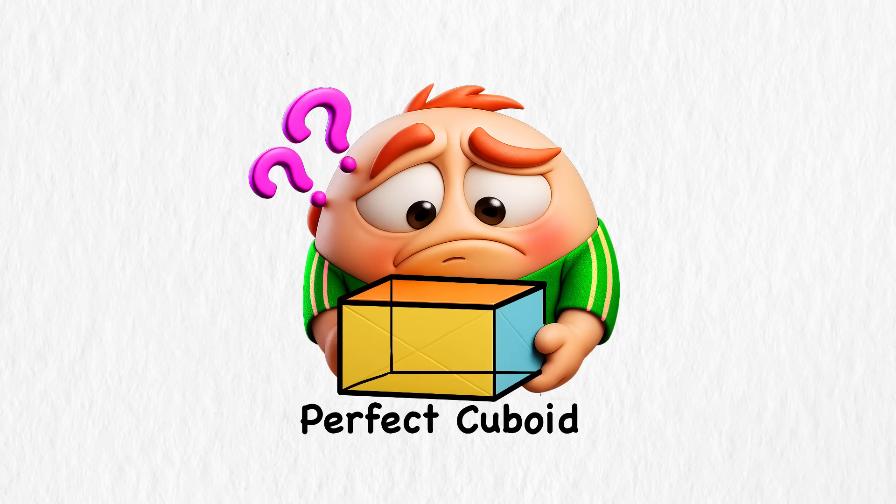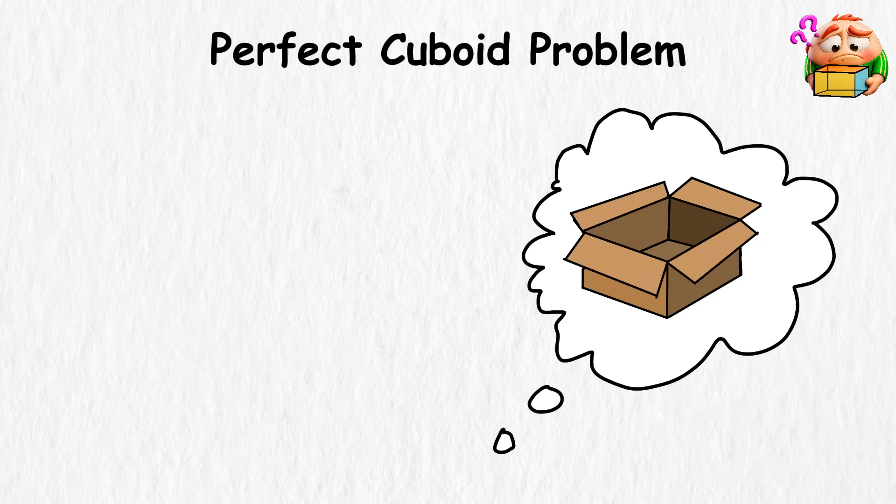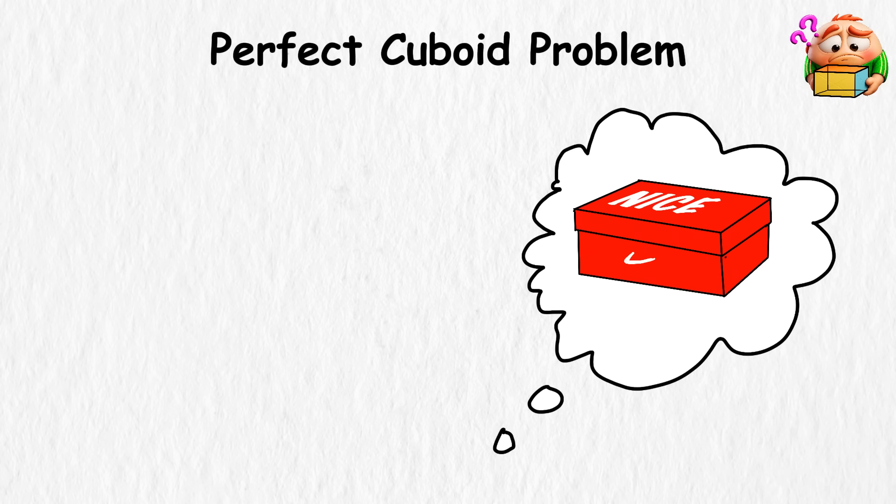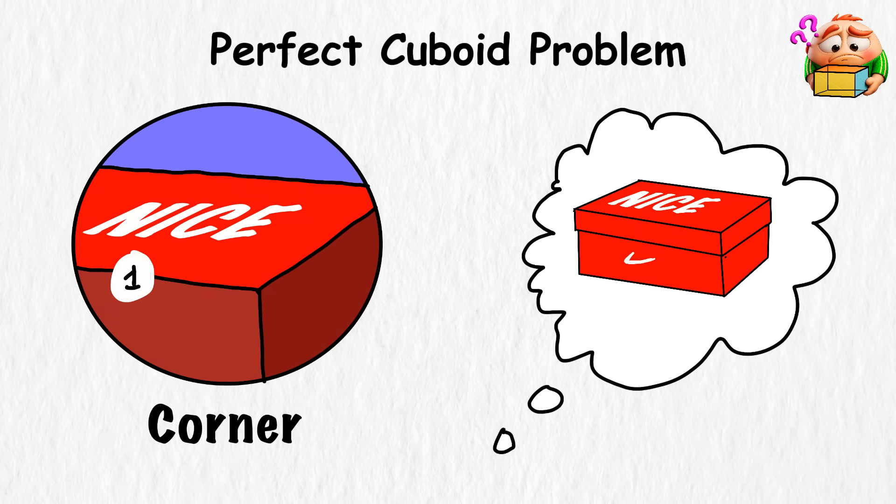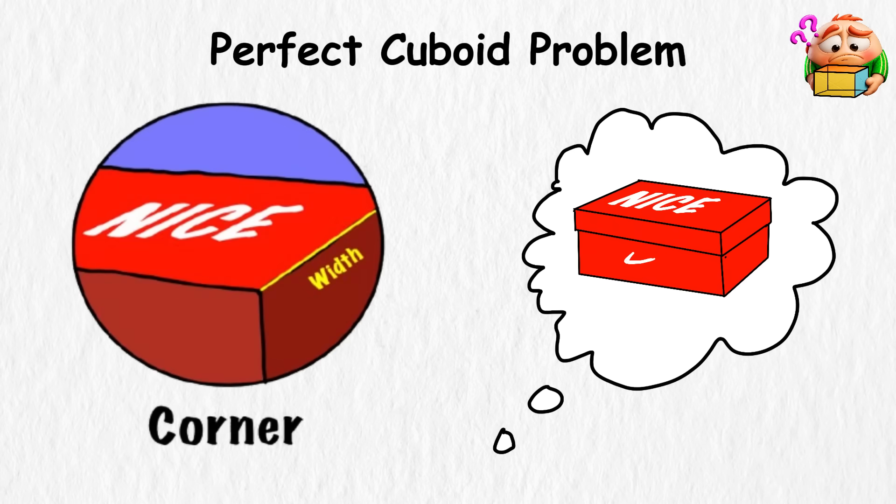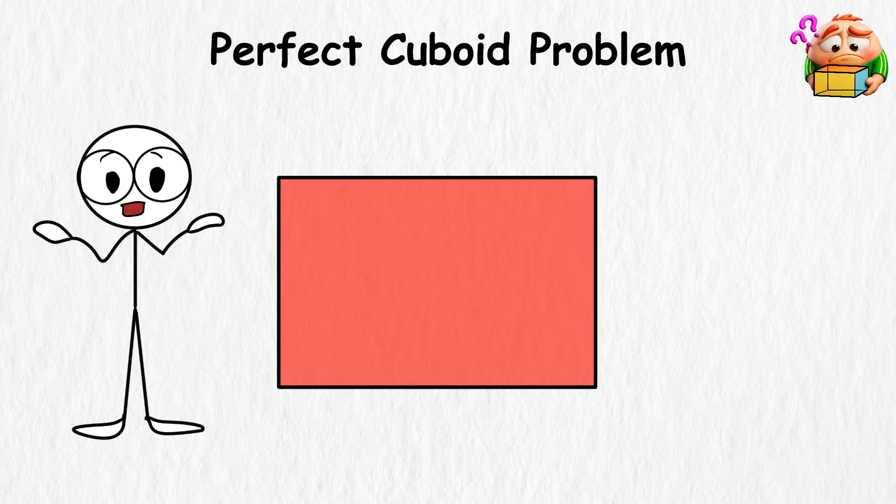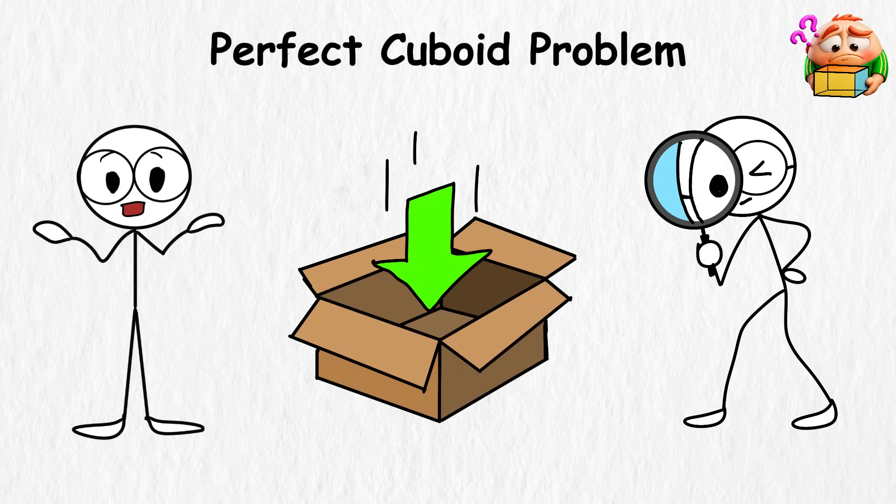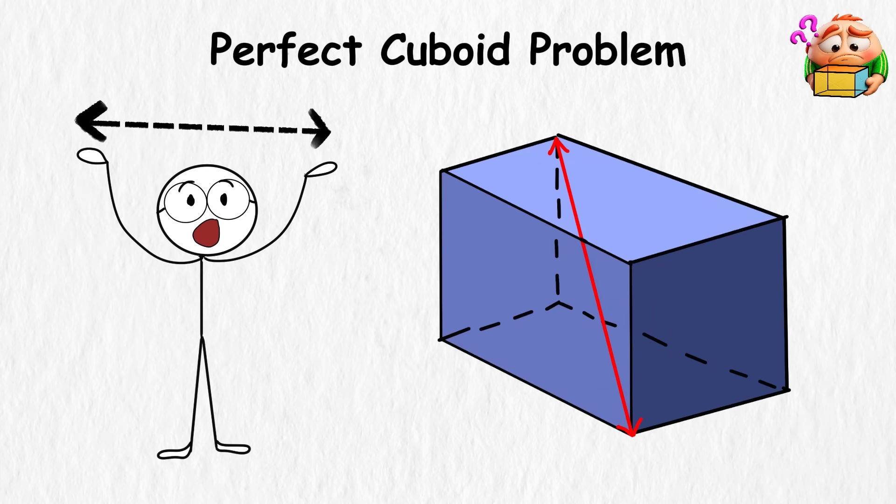Perfect Cuboid Problem. If you go ahead and picture an ordinary box, maybe something like a shoe box, then each corner has three edges meeting, the length, the width, and the height. Now, on every flat side of the box, you can also draw a diagonal line from one corner to the opposite. And if you look inside the box, there's one more, the space diagonal, the longest line running straight through the middle from one corner to the opposite corner.